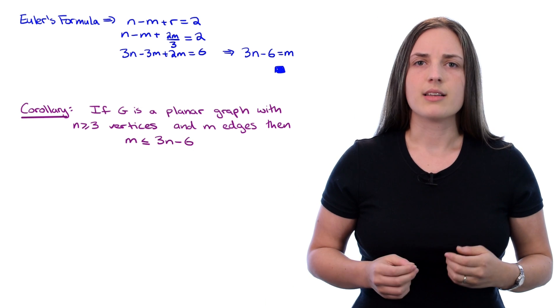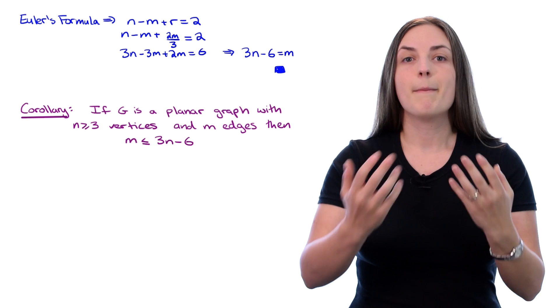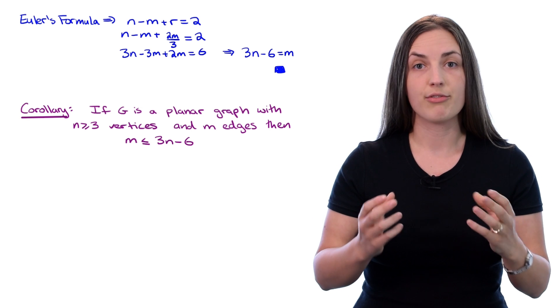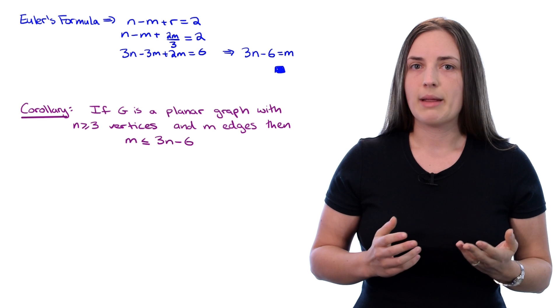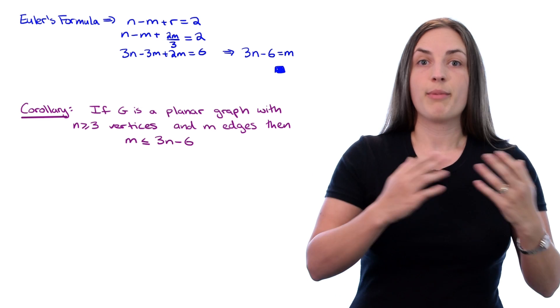This makes sense because a maximal plane graph is going to have as many edges as you possibly could have in a plane graph on N vertices. So it makes sense that if you just have any old planar graph, it will be bounded above by that number.